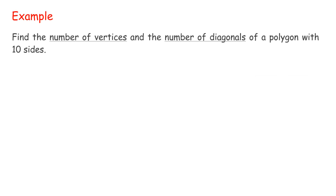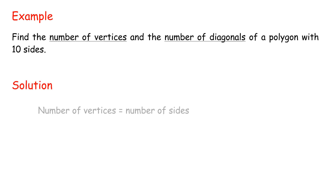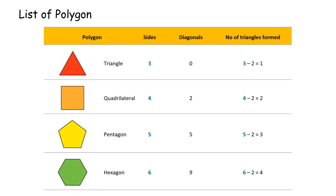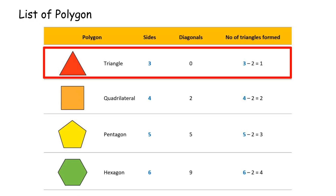Example: Find the number of vertices and the number of diagonals of a polygon with 10 sides. Solution: Number of vertices equals number of sides equals 10. Number of diagonals equals half times 10 times (10 minus 3) equals 35.